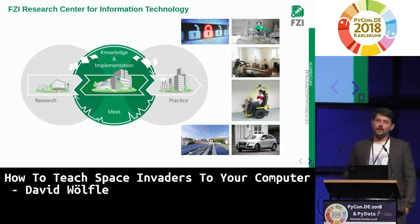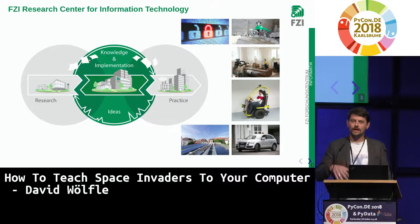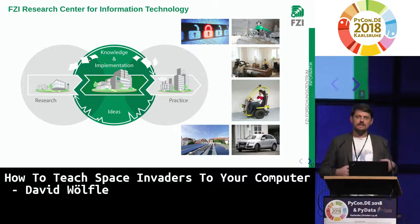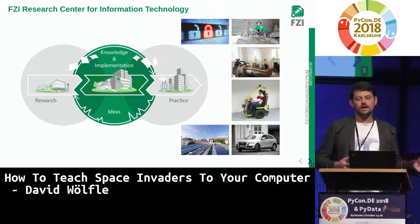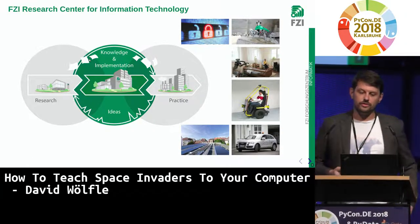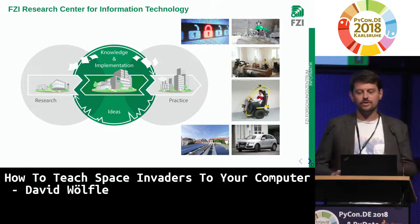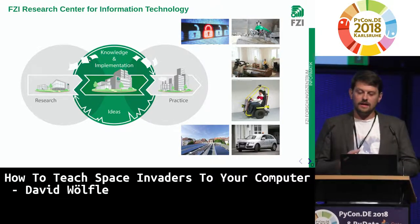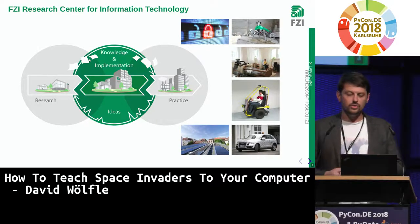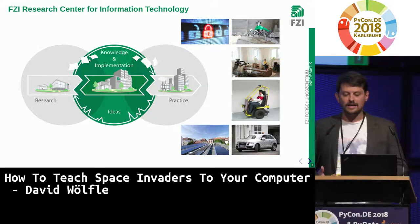Before I start, a little advertisement block. I work at the FCI Research Center for Information Technology in Karlsruhe, and we see ourselves as a transfer institution between university research and applied information technology in industry. We try to transfer research knowledge to industry and get impulses back to research. We have interesting fields like cyber security, software engineering, robotics, ambient assisted living, new transportation, autonomous vehicles, and the energy domain — which is what I work on.